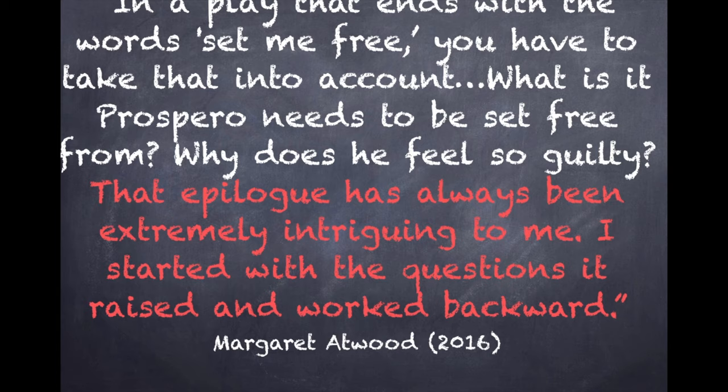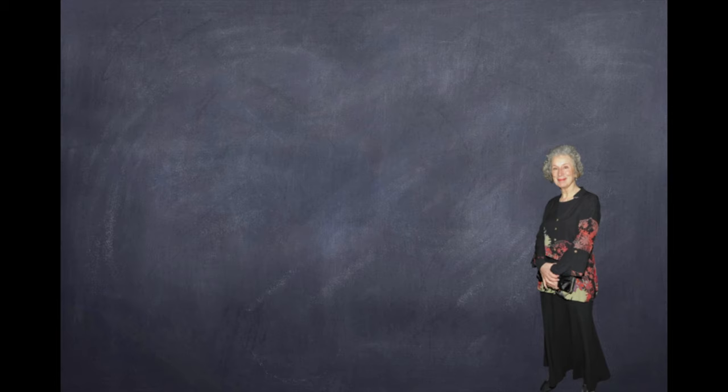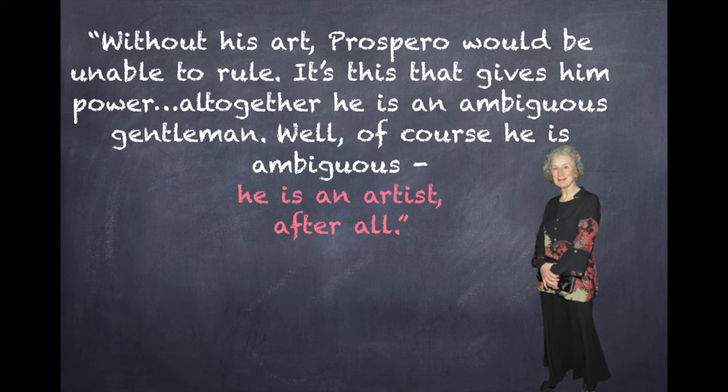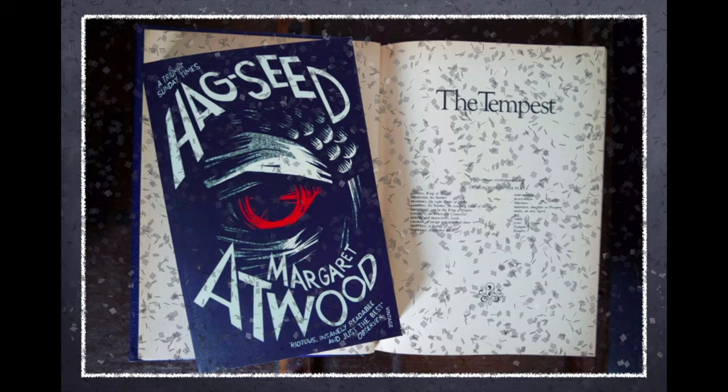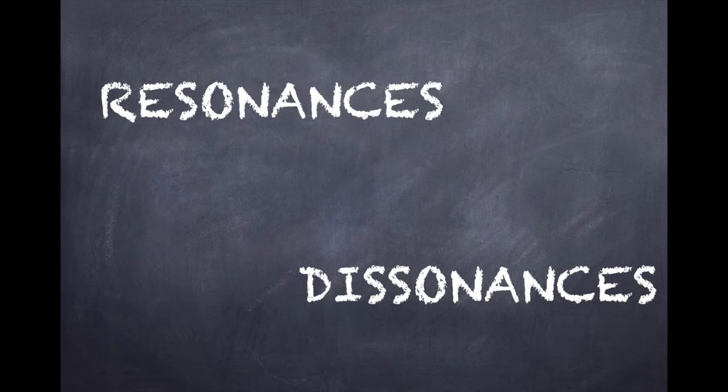In 2002, Atwood talked about the power of art and illusion in her essays about writing. Without his art, Prospero would be unable to rule — it's this that gives him power. Altogether, he is an ambiguous gentleman. Well, of course he is ambiguous. He is an artist, after all. This thematic combination of power and creative artistry, and the often blurred boundaries between the two in the play, offer many opportunities for exploration in the modern context.